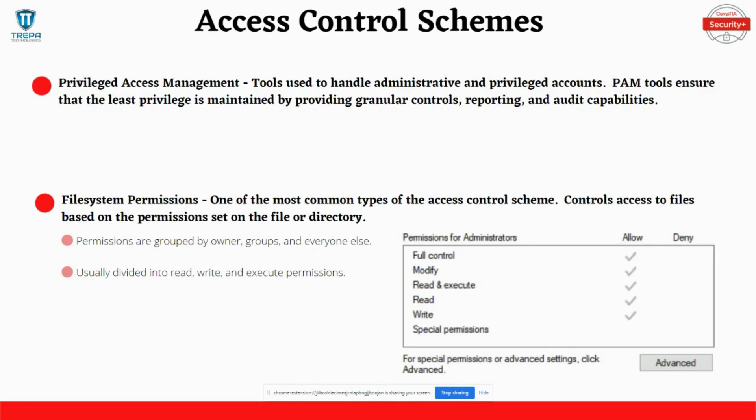Privileged Access Management, or PAM, is a software tool that maintains and alerts on access control policies in the enterprise. PAM tools ensure that least privilege is maintained by providing granular controls along with reporting, alerting, and audit capabilities.